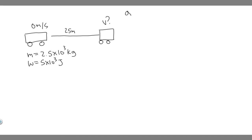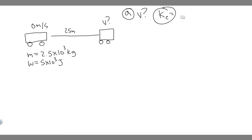So let's go ahead and start with Part A. We're trying to solve for V — the velocity after the car has been pushed 25 meters. In order to solve this, there are a few formulas you need to know. The first is the formula for kinetic energy: kinetic energy equals one-half MV squared.